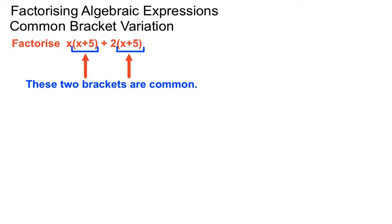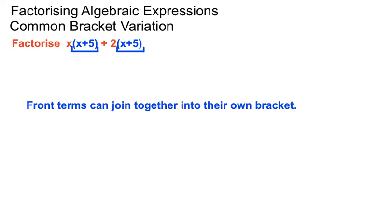We're allowed to do something very special. The front terms, the x and the 2, can join together in their own bracket for the factorized version. So the x can go into the front of a bracket and the +2 can join it, and then we just list the second bracket once.